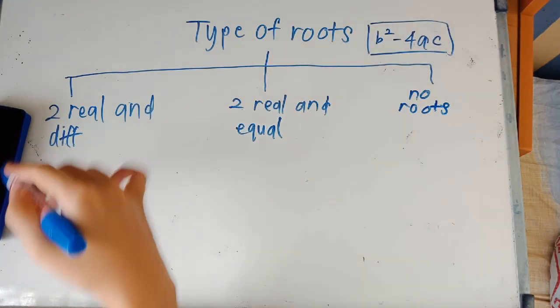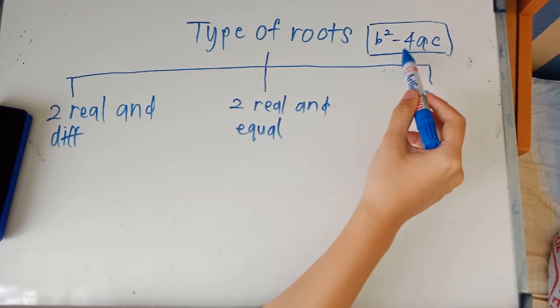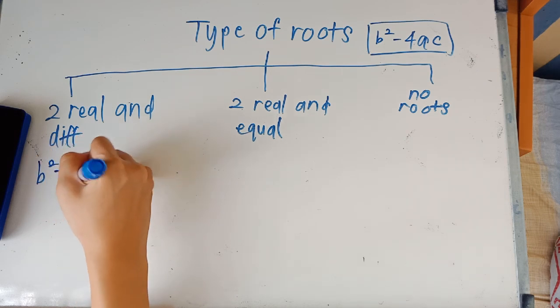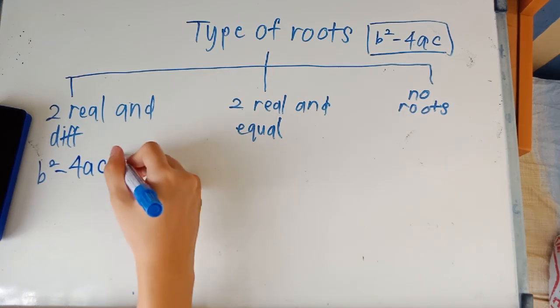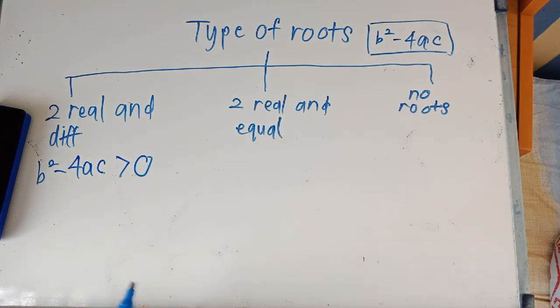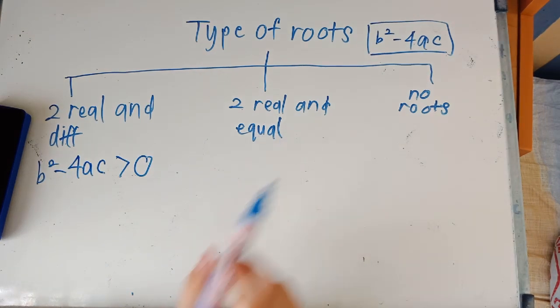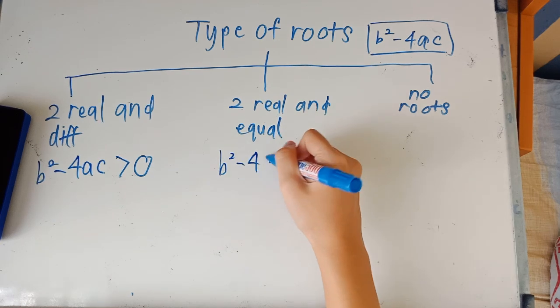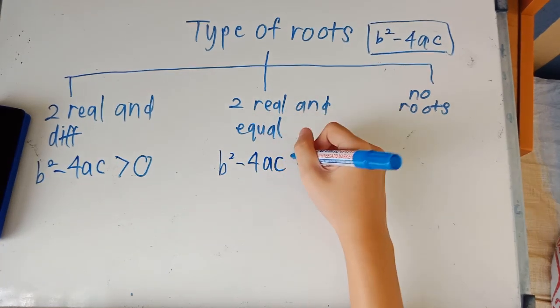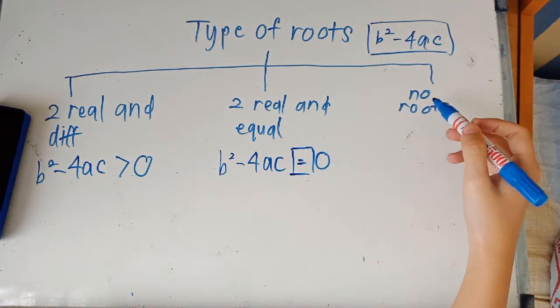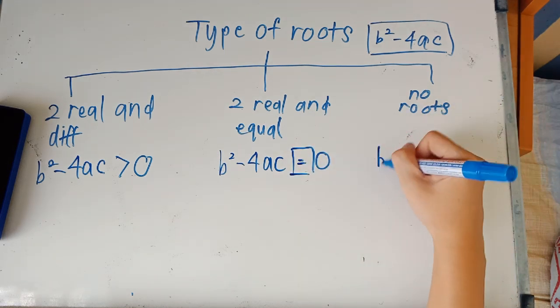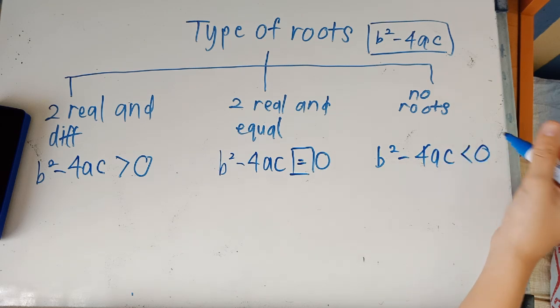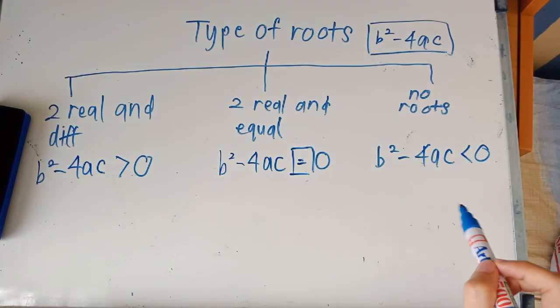And how would you know this is by referring to this expression. So for real and different roots, b squared minus 4ac would be more than zero. If the roots are real and equal, then b squared minus 4ac would be equal to zero. So equal, the equal sign is here. And then if it has no roots, then b squared minus 4ac would be smaller than zero. I hope you take note of these three expressions.